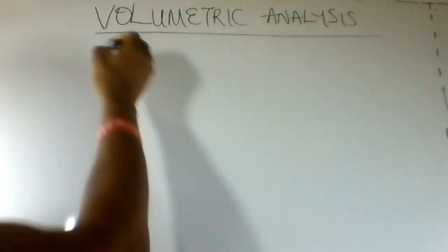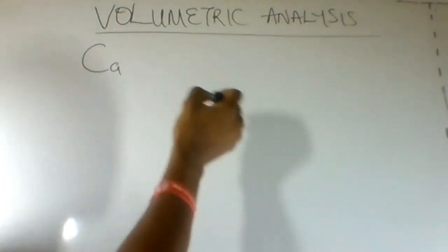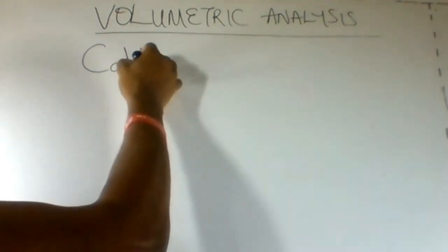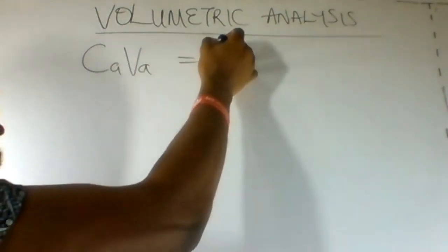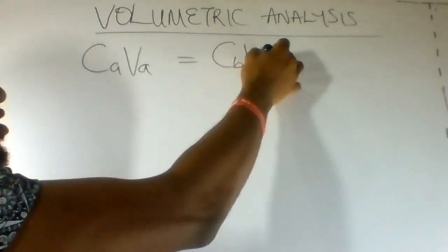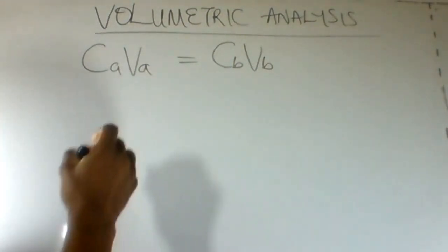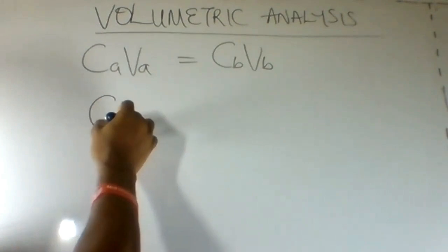Concentration of acid multiplied by volume of acid equals concentration of base multiplied by volume of base. We're looking for the concentration of the acid.